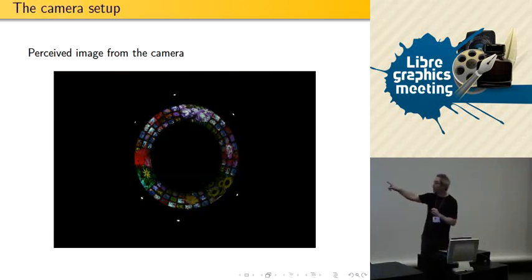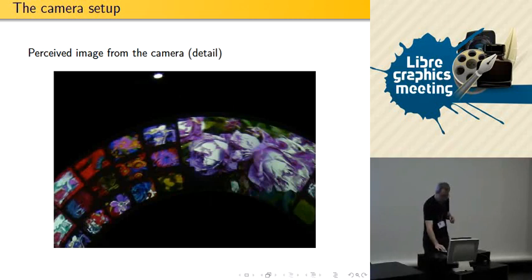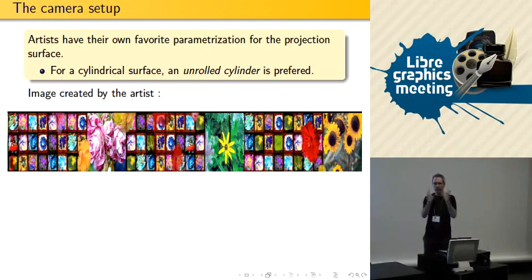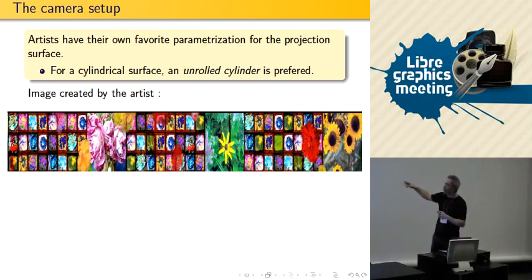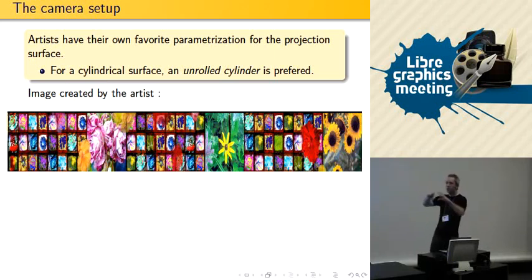This is what the camera sees — the camera's perspective looks kind of like a donut, and you can see the six little dots that were the six projectors. But the artist is not going to want to work on a donut like this, even in GIMP or something. So we propose using what we call the artist-friendly coordinate system, which is basically the artist-centric coordinate system — and we map it to the camera. For cylindrical screens, the favorite is an unwrapped cylinder.